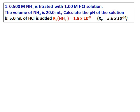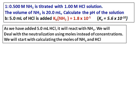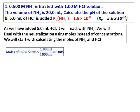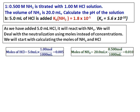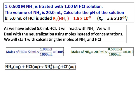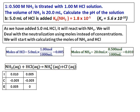For the second part, when I have added 5 mL of hydrochloric acid, it will react with ammonia. I need to calculate how much ammonia is left over after the reaction with HCl. First, calculate the moles of hydrochloric acid and moles of ammonia. Then write down the neutralization reaction between ammonia and hydrochloric acid, set up the ICE table, and all the HCl will get neutralized.